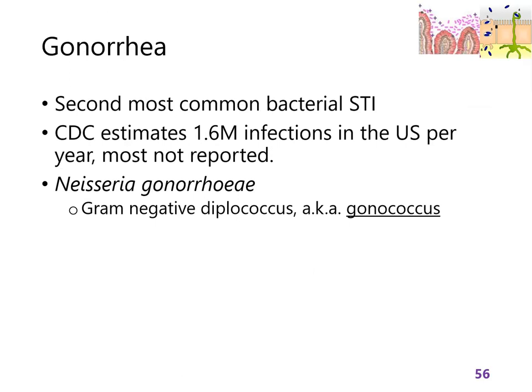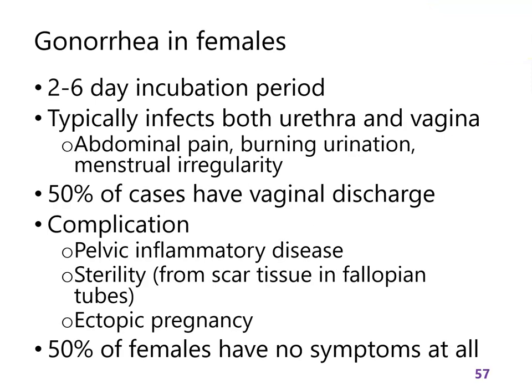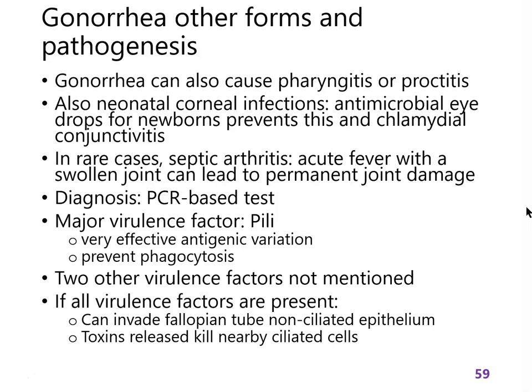Neisseria gonorrhoeae is from a different genus and behaves differently, but ultimately causes a similar disease. In females it causes inflammation and disruption of the reproductive tract, with potential complications moving toward the ovaries, including sterility. In males, a similar pattern occurs. In neonates, Neisseria gonorrhoeae can cause a corneal infection — distinct from the conjunctivitis caused by Chlamydia — but either pathogen can lead to blindness.